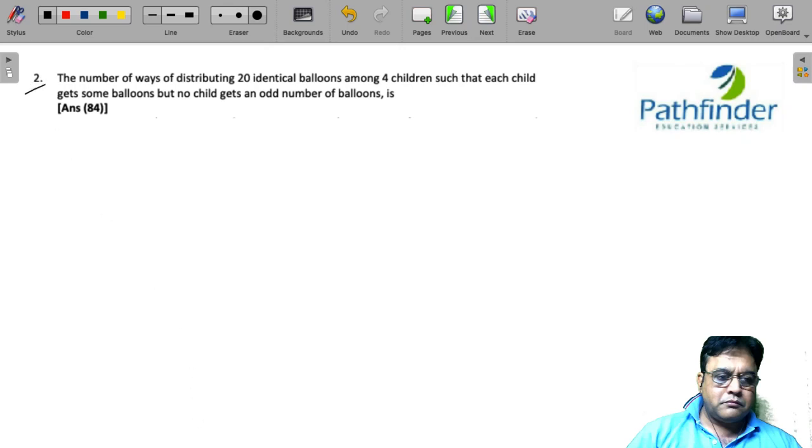CAT 2022 Slot 1 Quantitative Aptitude Question Number 2: The number of ways of distributing 20 identical balloons among 4 children such that each child gets some balloons but no child gets an odd number of balloons.